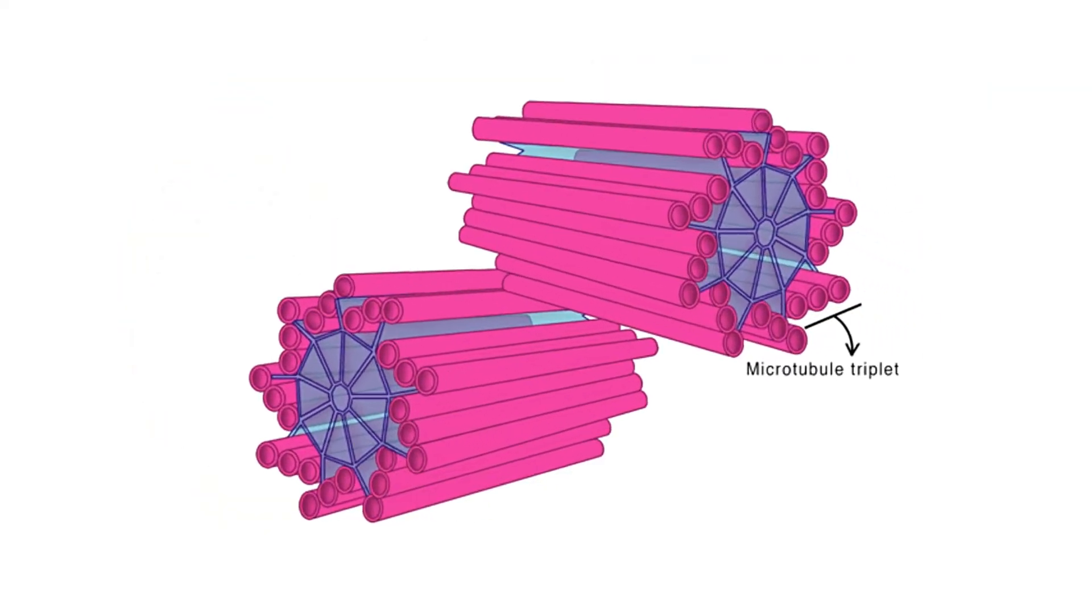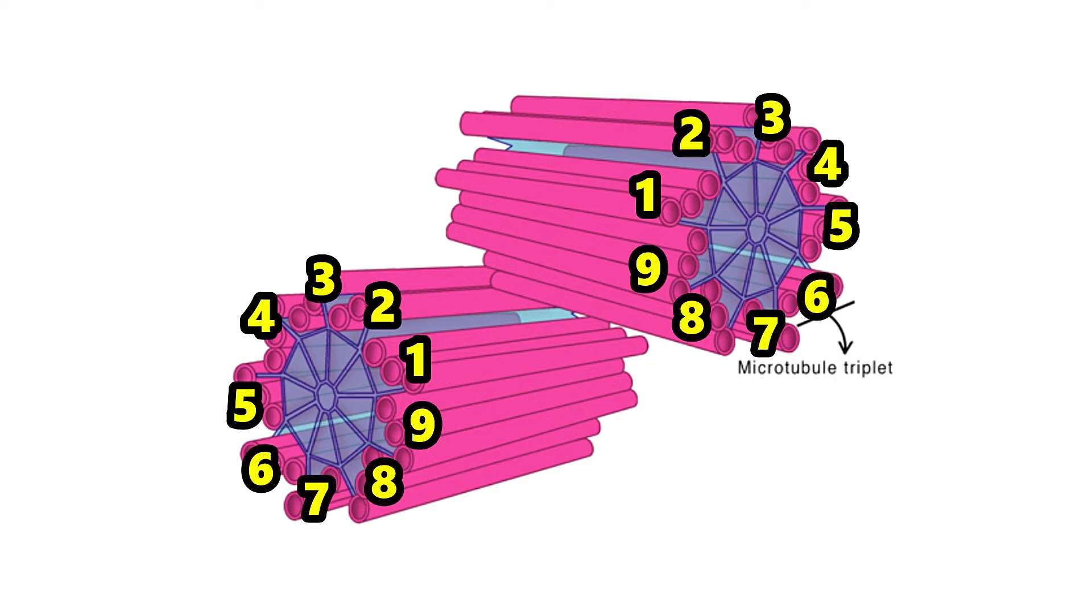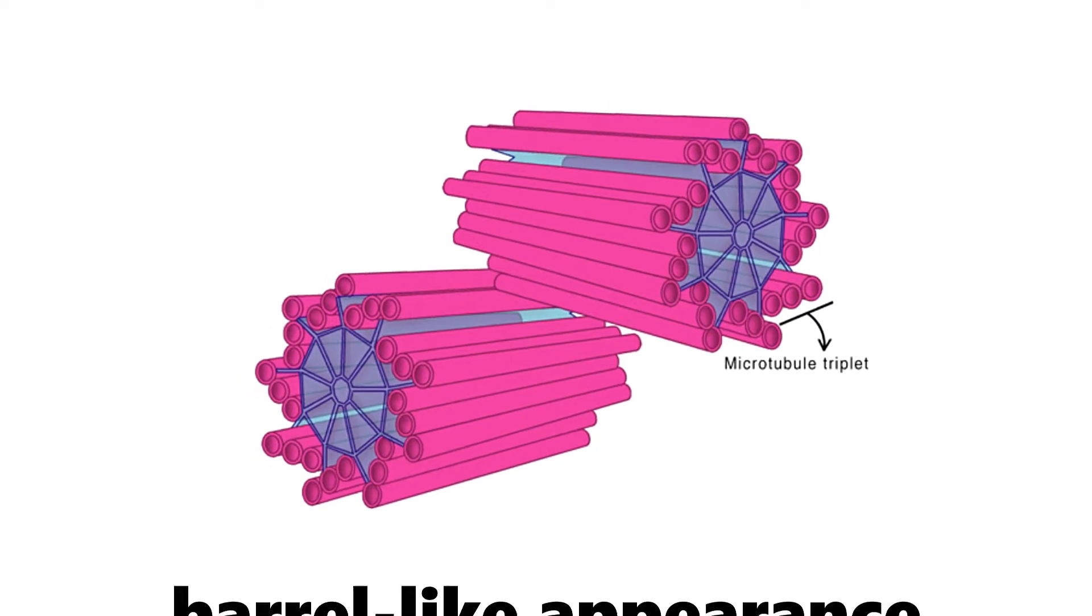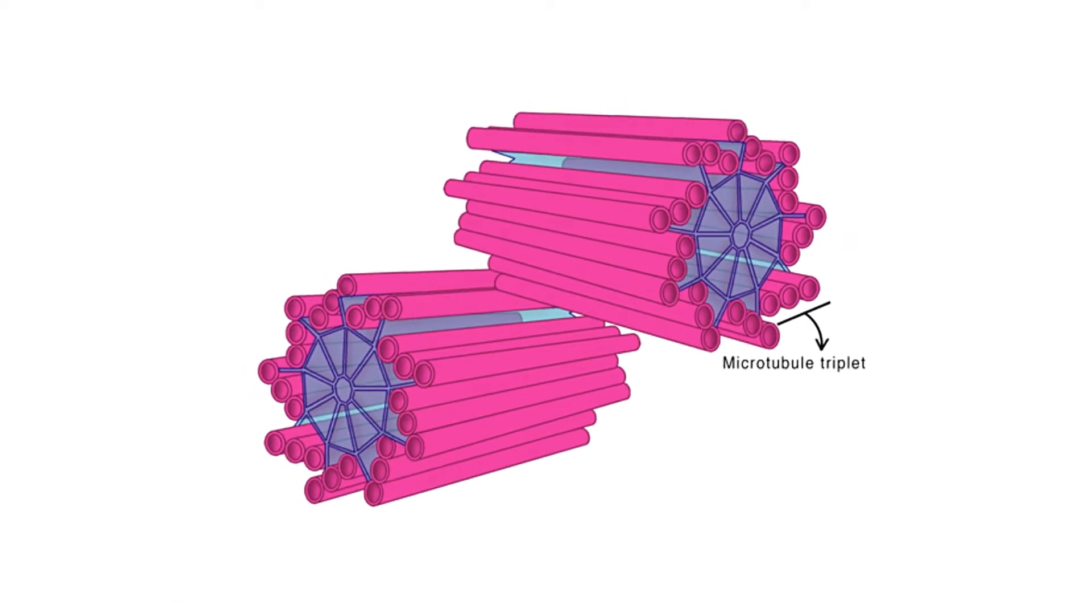Each centriole consists of nine sets of triple microtubules arranged in a cylindrical fashion, giving them a barrel-like appearance. The centrioles come in two varieties, the mother centriole and the daughter centriole.